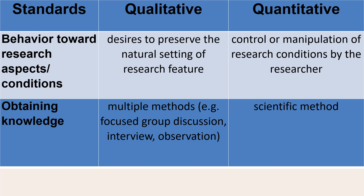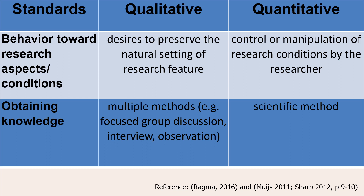For obtaining knowledge, under qualitative research, it makes use of multiple methods such as focus group discussion, interview, and observation. The researcher utilizes multiple data gathering techniques depending on the direction of the work. Data gathering techniques used in qualitative research include individual in-depth interviews, organized and unstructured interviews, focus group discussion (FGD), and facility, visual, or documentary analysis.